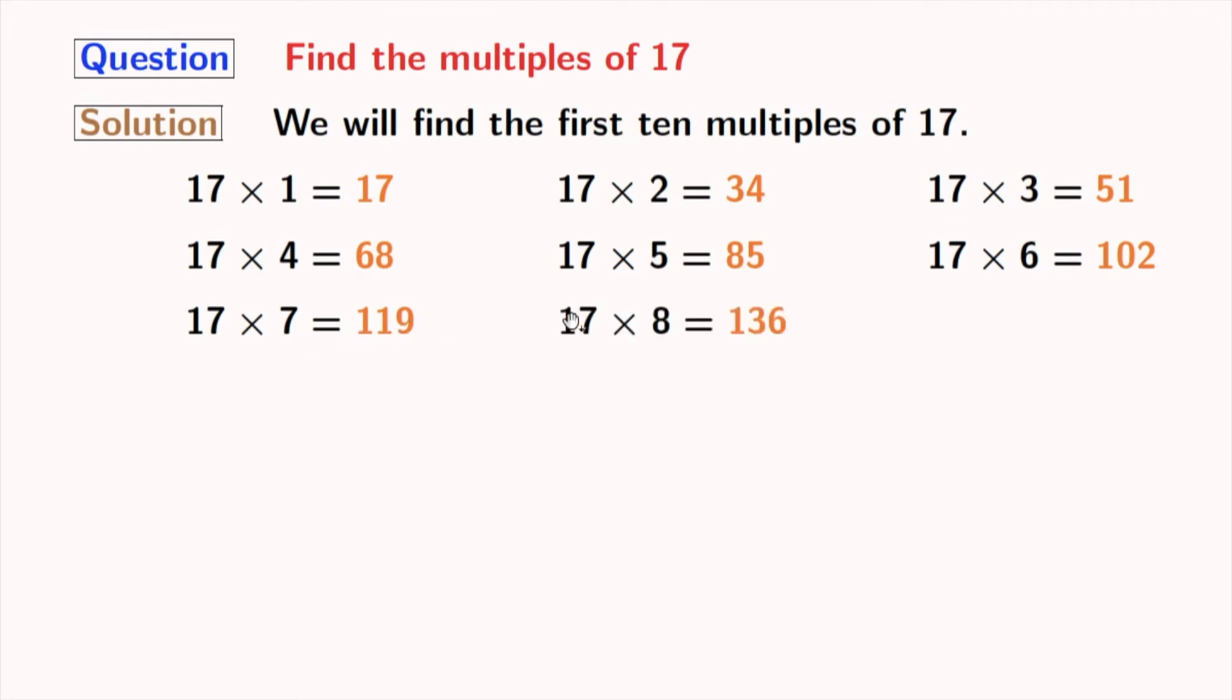If we multiply 17 with 8, we get 136. If we multiply 17 with 9, we get 153. And if we multiply 17 with 10, we get 170.